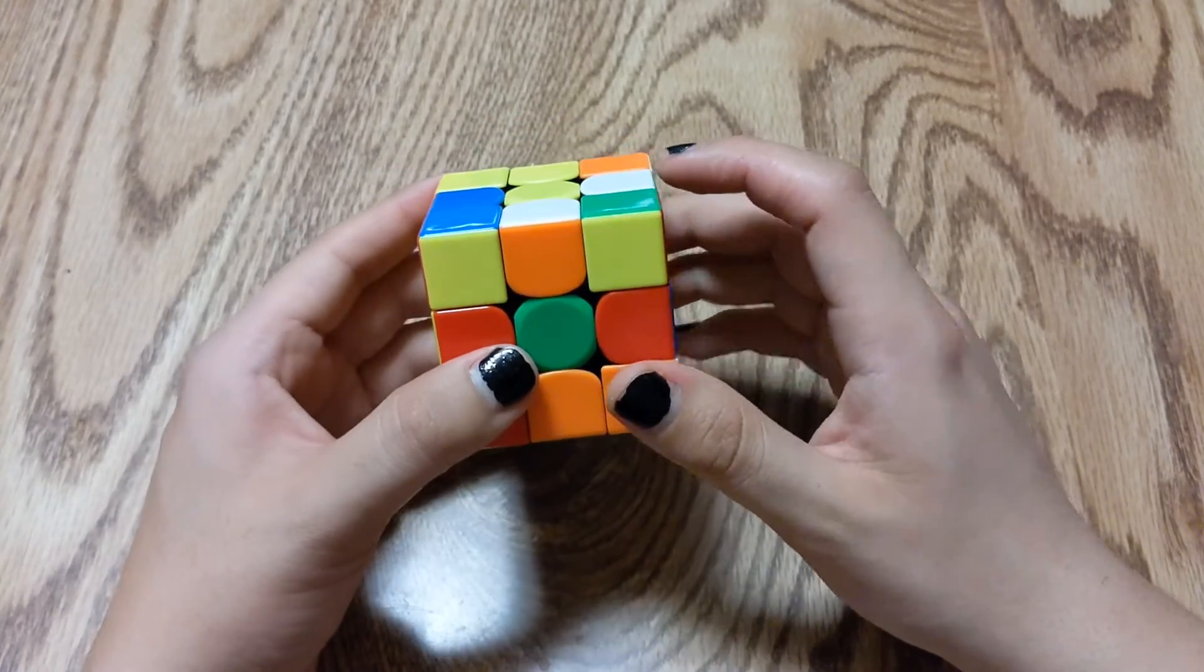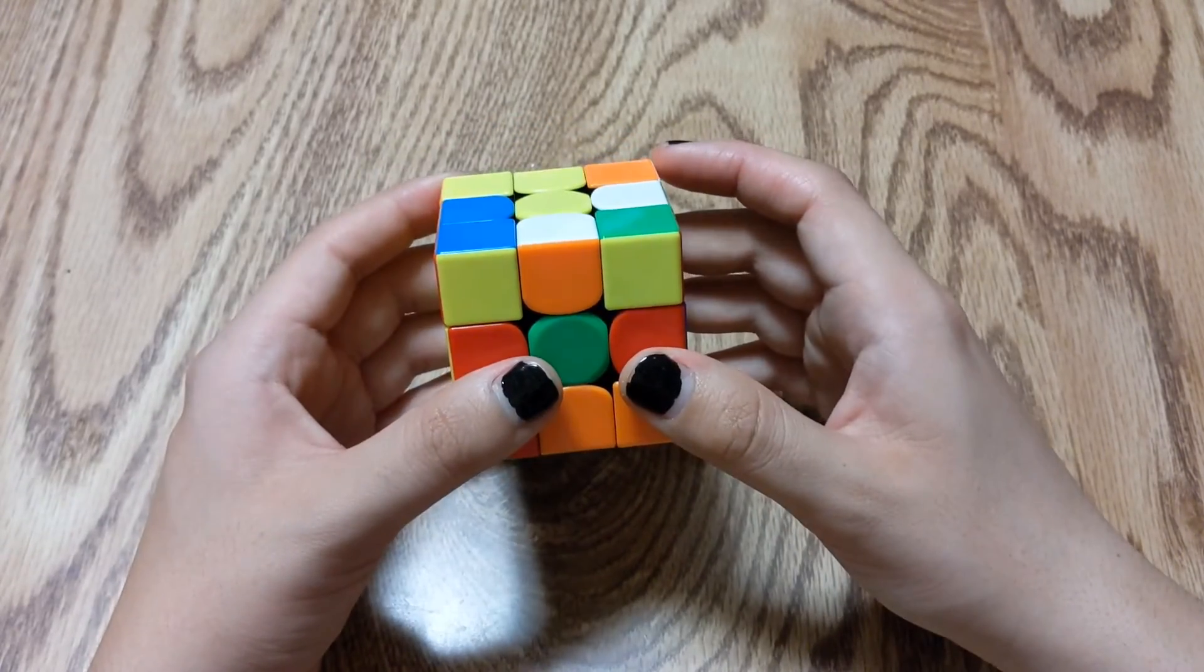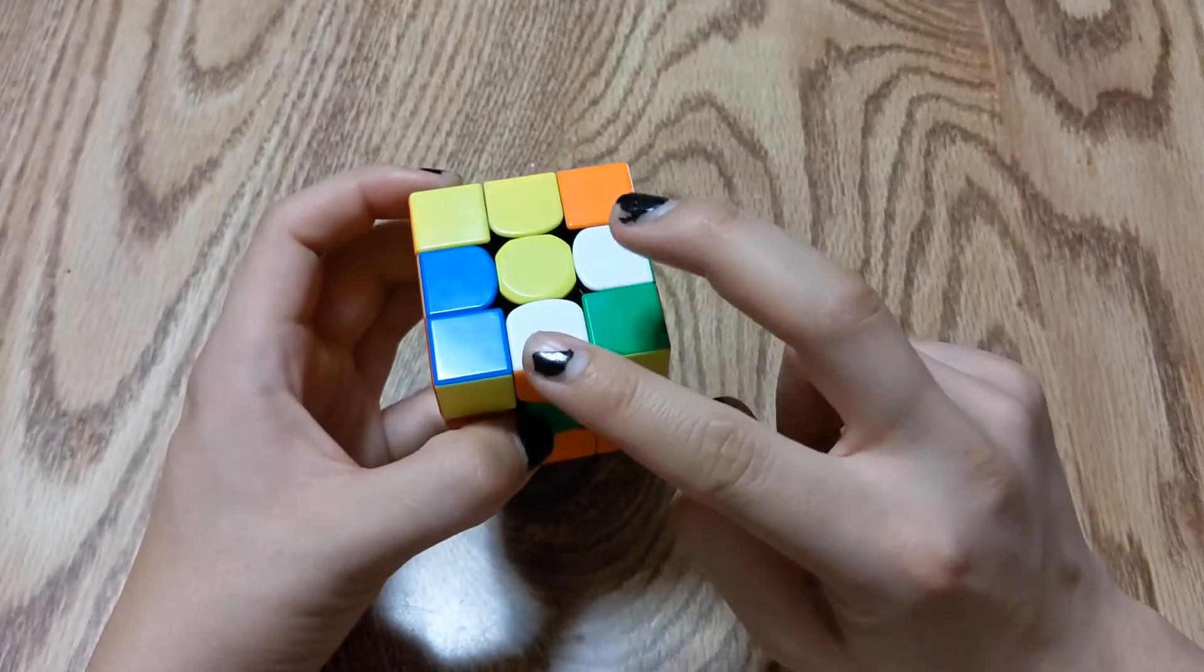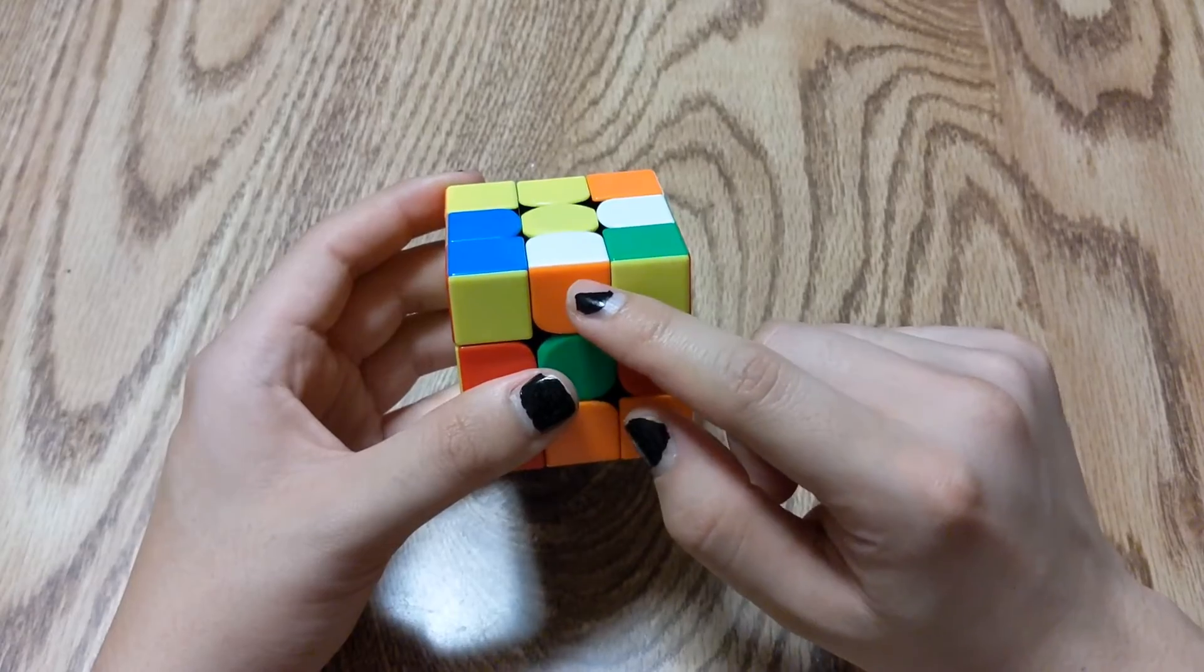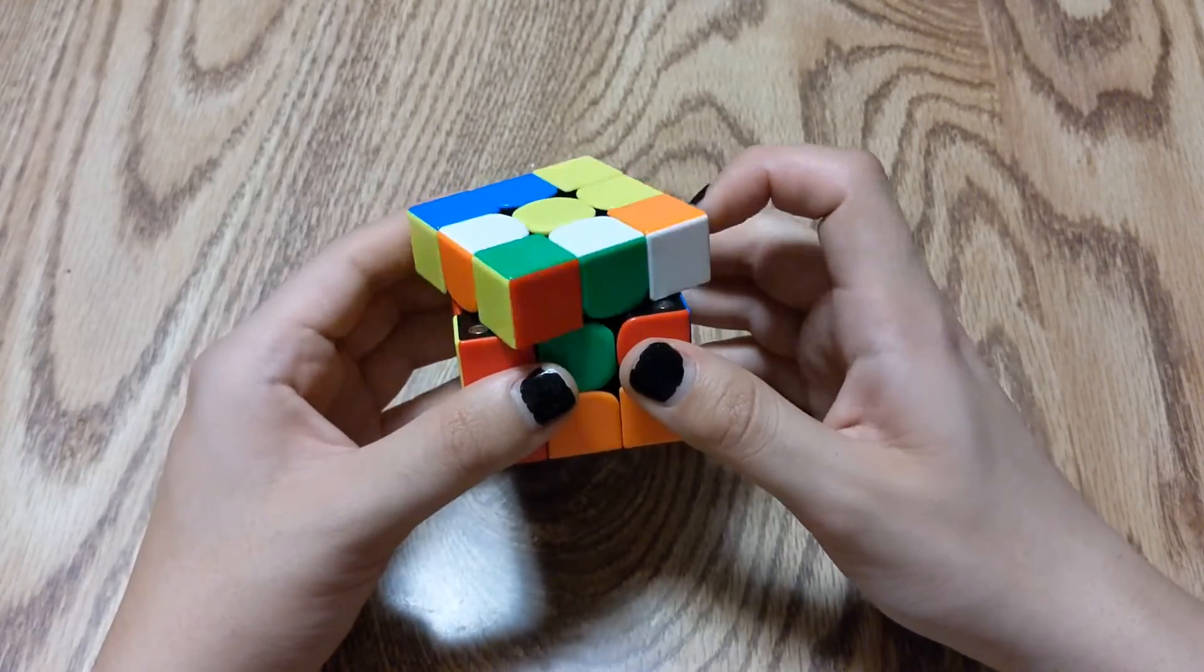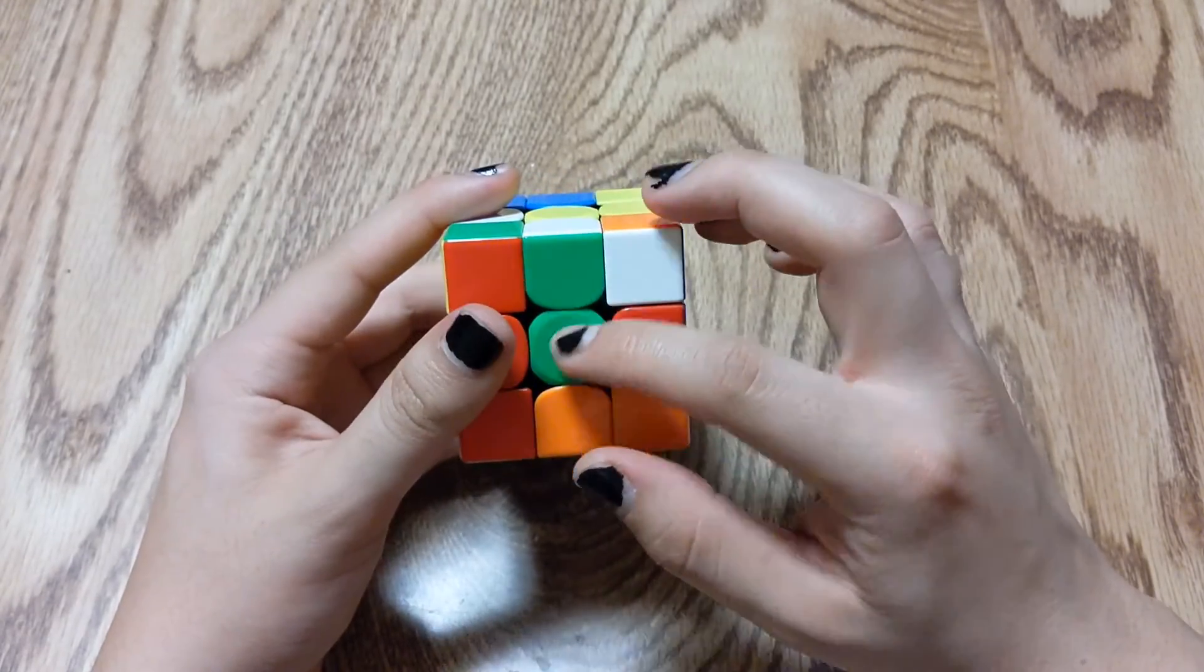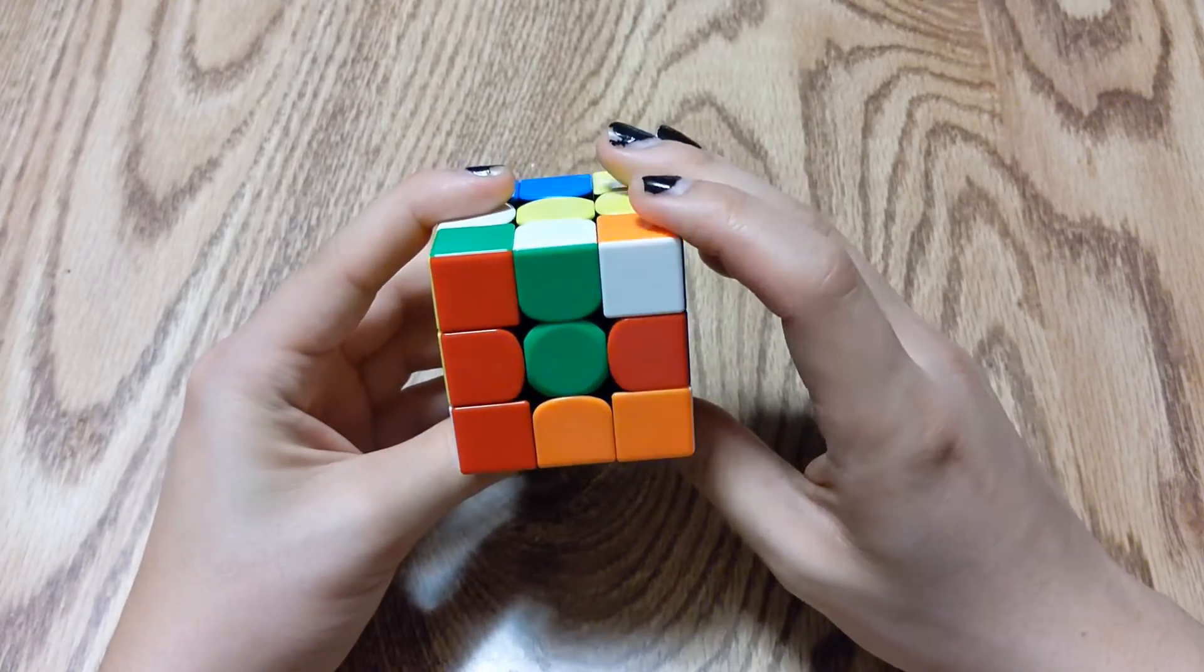We're gonna turn it over to the green side. And we're gonna cycle through the last two edge pieces. So it's not orange. But it is green. And we're gonna bring that down.